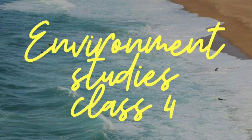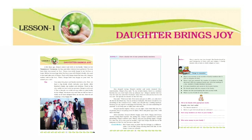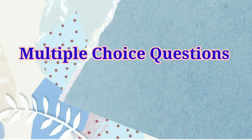Environment Studies Class 4 Chapter 1: Daughter Brings Joy. Dear children, you have read in this chapter about joy in family and its benefits. We also came to know about family relations and their importance. We learned that we should adopt a perspective of equality irrespective of caste and religion. Today, we shall do the revision of this chapter by some multiple choice questions.